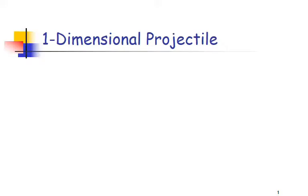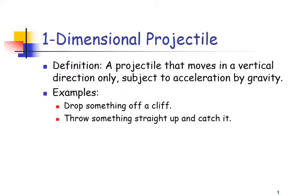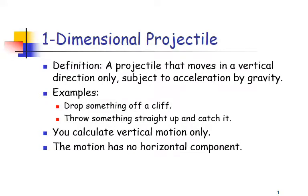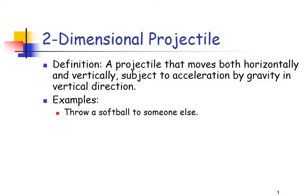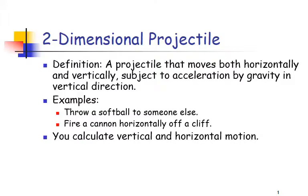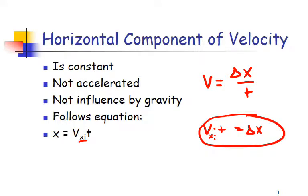For a one-dimensional projectile, motion occurs in the vertical direction only — like dropping something off a cliff or throwing something straight up. There is no horizontal component. For a two-dimensional projectile, there's motion in both X and Y directions, with acceleration only in the Y direction — like throwing a softball or firing a cannon off a cliff. In the X direction, because there's no acceleration, the only equation is: displacement equals initial X velocity times time.